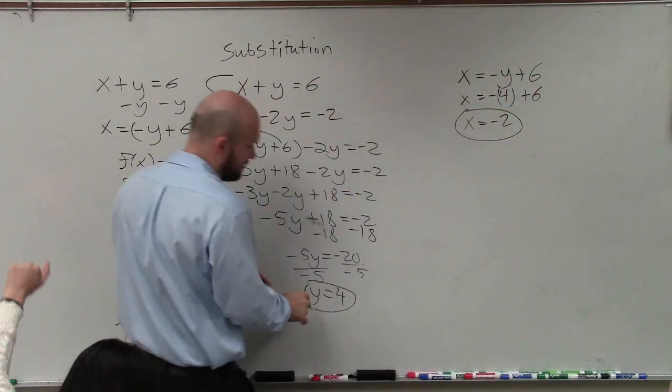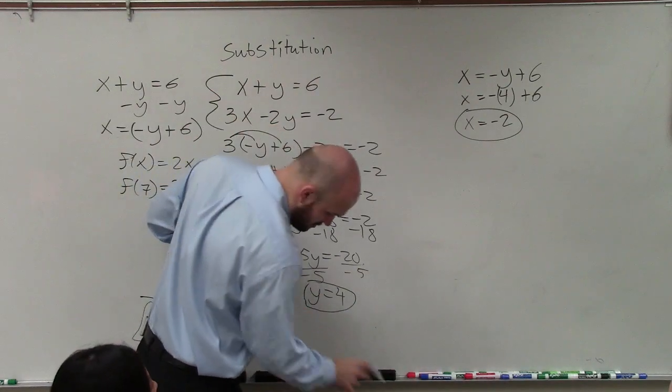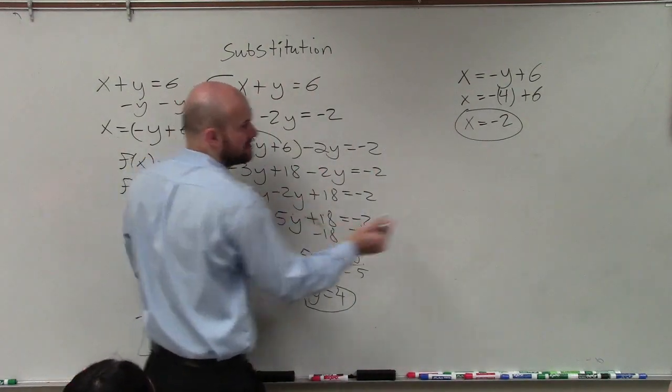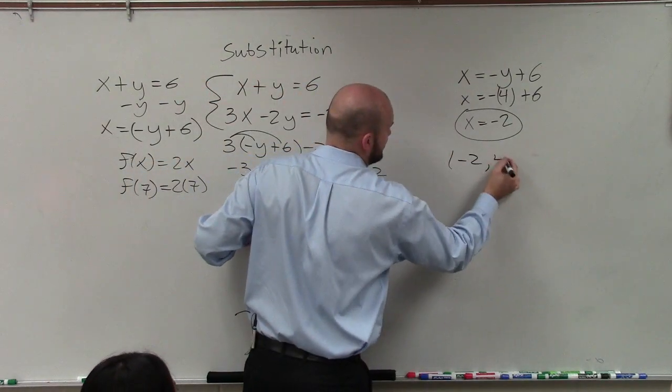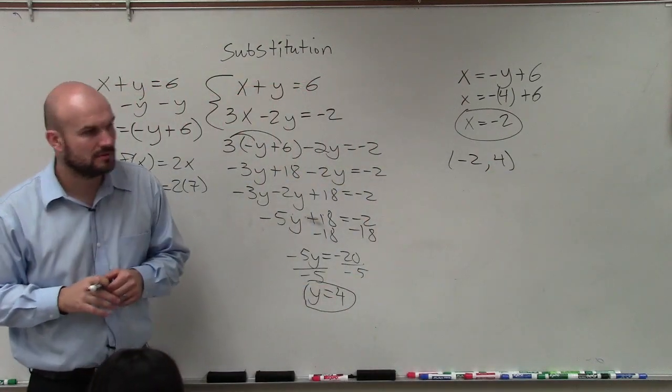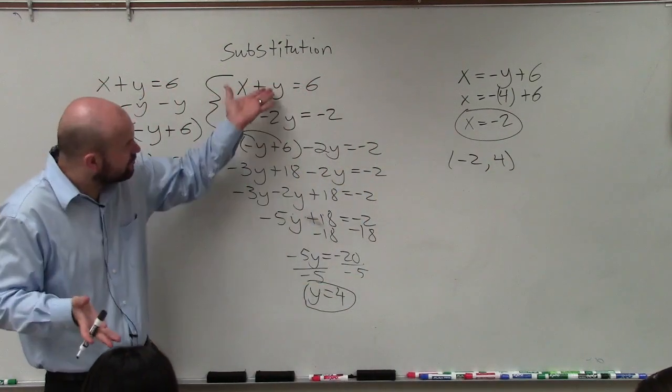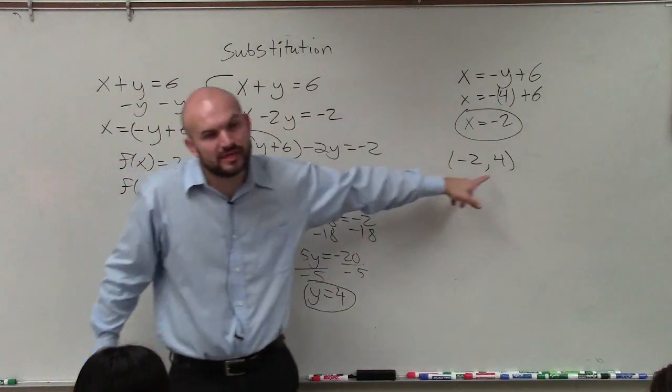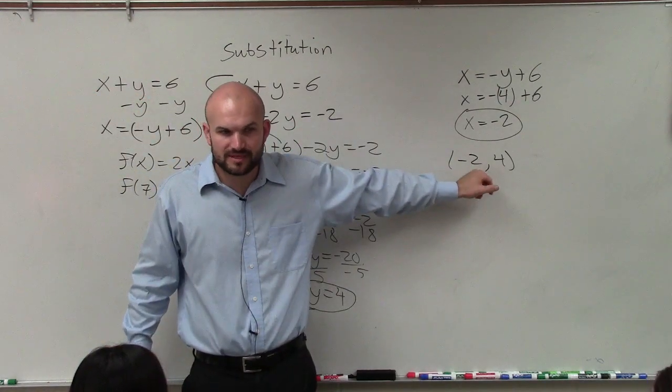So now, ladies and gentlemen, I know the value of y and I know the value of x. So now I can write that as a coordinate point, negative 2 comma 4. And that would be, if you were to graph these two lines, that's where they would intersect. Make sense?